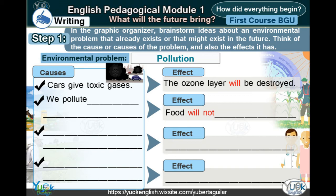Environmental problem: Pollution. Examples. Causes: Cars give toxic gases. Effect: The ozone layer will be destroyed.